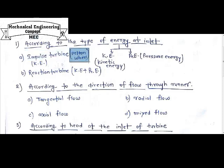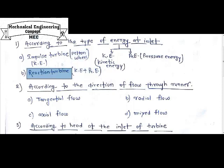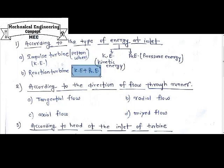The basic example of the impulse turbine is the Pelton wheel turbine. The second type uses a combination of kinetic plus pressure energy, which is known as a reaction turbine. So when the entered energy is kinetic only, it is an impulse turbine — example: Pelton wheel. When it is a combination of kinetic and pressure energy, it is a reaction turbine.